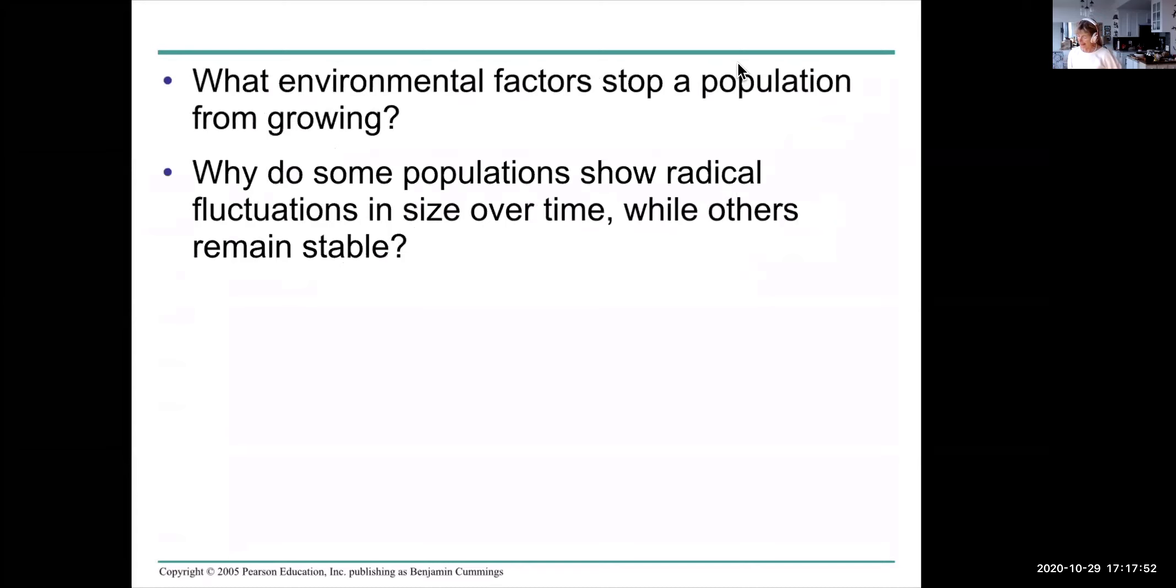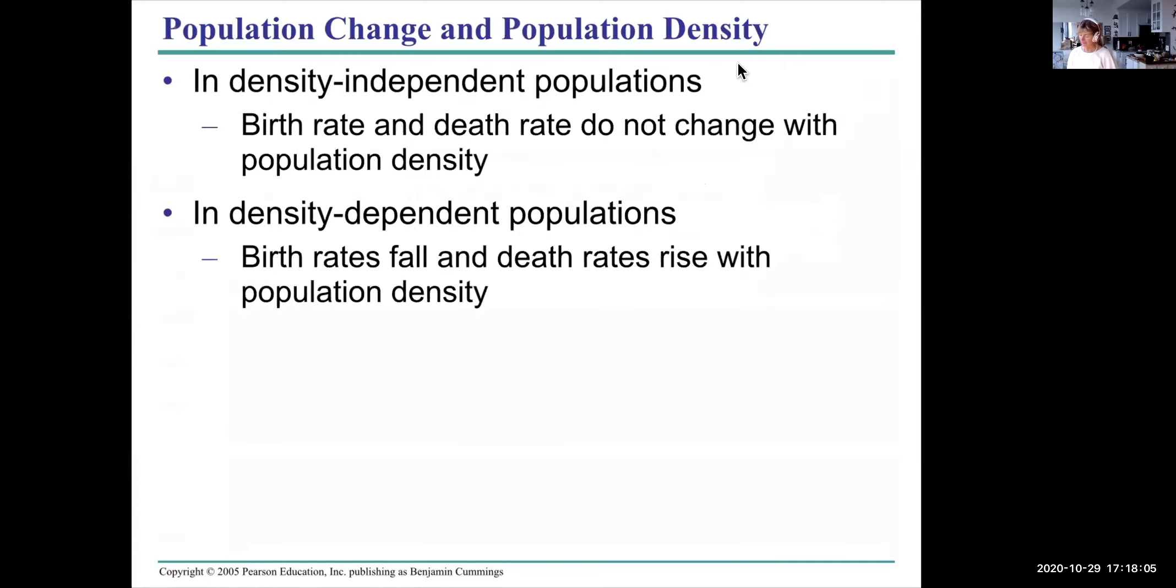The regulation of a population size can be an abiotic variable. Some populations show very radical fluctuations over time and others remain stable. Population change can occur because density goes up or it can occur for other reasons. If population change is density independent it means that the birth rate and death rate don't change with density whether the density is high or low. But in density dependent populations birth rates do fall and death rates can rise with population density.